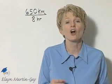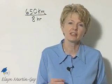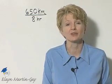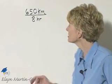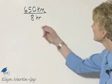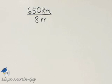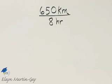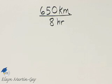Now let's look at a special type of rate called a unit rate. It's simply a unit rate when you write it so that the denominator is 1. So let's take this rate and write it as a unit rate. It's 650 kilometers in 8 hours.